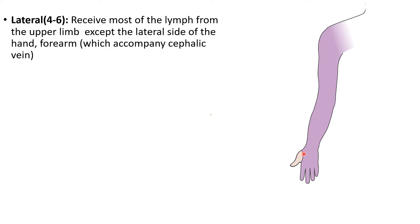Remember: the cephalic vein is present laterally and the basilic vein medially. The subcutaneous lymph vessels from the lateral aspect of the thumb, forearm, and arm pass along the cephalic vein and drain directly into the apical group.